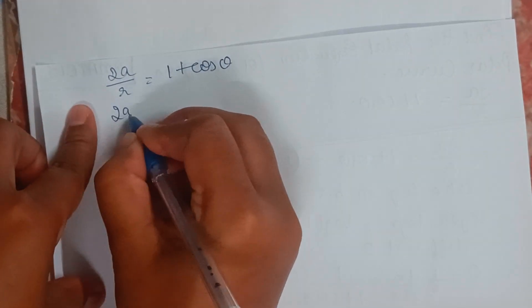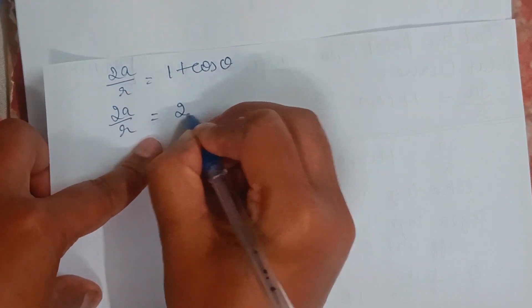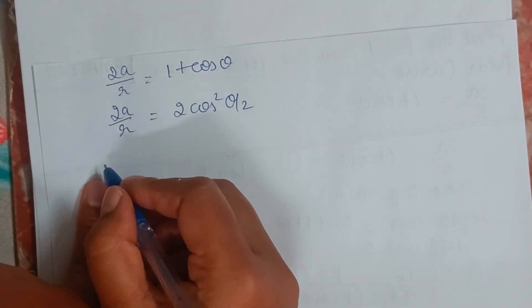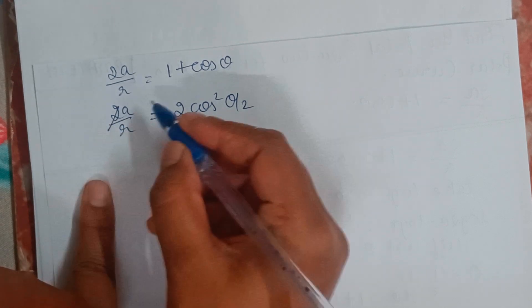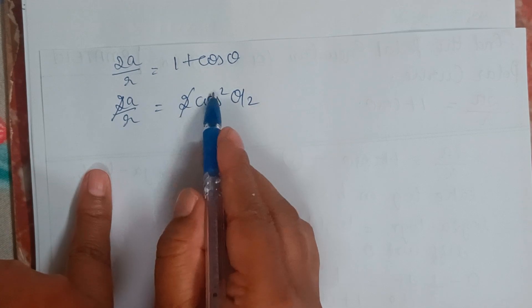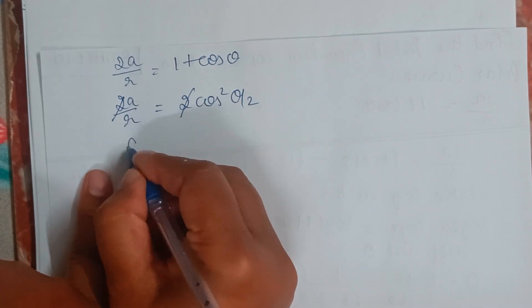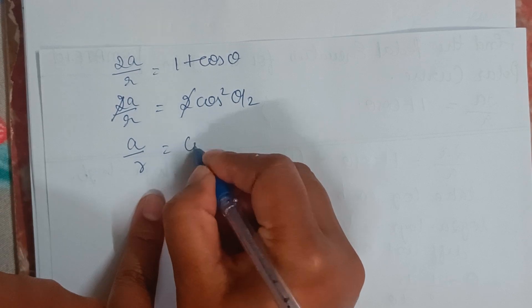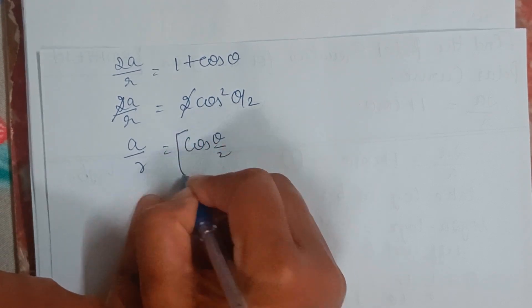1 plus cos theta can be written as 2 cos square theta by 2. Now, 2 and 2 will get cancelled. And this, I can take it as A by R equals cos theta by 2, the whole square.